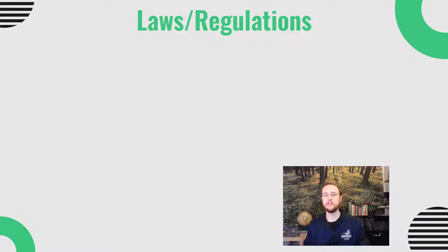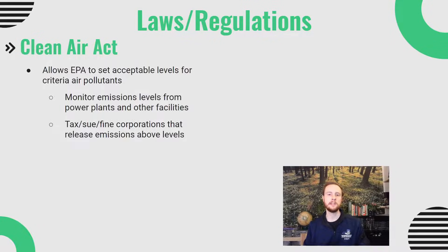Now we'll talk about some laws and regulations that can be used to reduce emissions. The first is the Clean Air Act, which gives the EPA the ability to set acceptable levels of six different criteria air pollutants. The EPA can monitor these levels and tax or levy penalties against institutions, corporations, companies, and factories that release more emissions than are acceptable. This is one of the most important laws in terms of limiting air pollution in the United States.